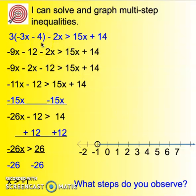So let's look at this and try to determine what are our steps. Well our first step I notice is the distributive property because if I take 3 times negative 3x I will get negative 9x and if I take 3 times negative 4 that will get me to negative 12 and then everything else remains the same. So that's got to be my first step.